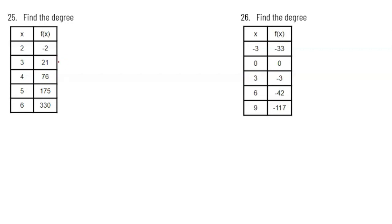Now we're going to examine the differences. From negative two to 21, that's an increase of 23. Then from 21 to 76, that's an increase of 55. Then from 76 to 175, that's an increase of 99. Then from 175 to 330, that's an increase of 155. So my first set of differences — 23, 55, 99, 155 — were definitely getting bigger, so we need to check the next set of differences.